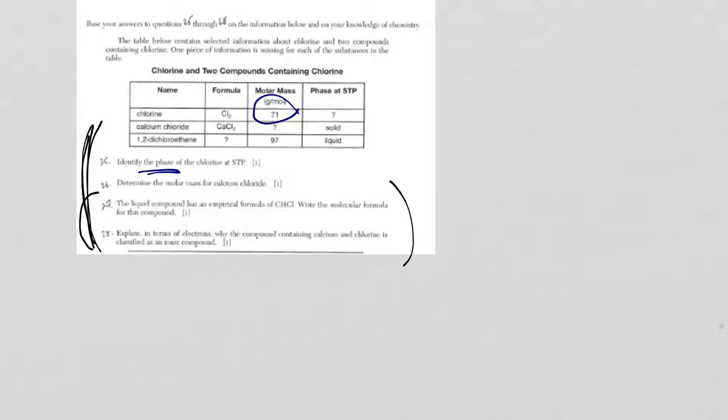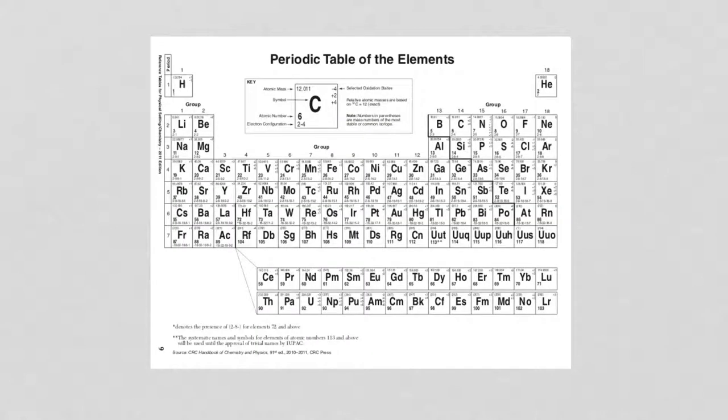So at standard temperature and pressure, if we take a look at the table here, we have fluorine and chlorine that are gases. For the halogens, bromine is the only liquid non-metal, and iodine is a solid.